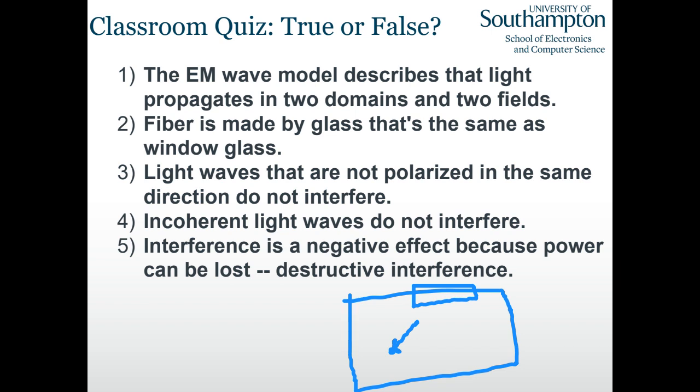Coming back to the quiz. The first question — true or false: the EM wave model describes that light propagates in two domains and two fields. This is true. Two domains are time and distance; two fields are electric field and magnetic field.